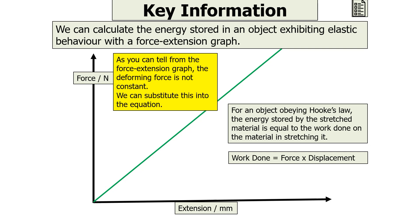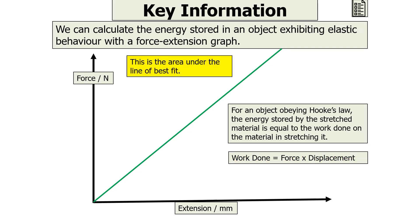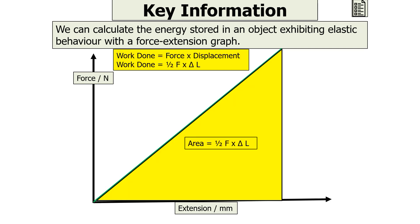We can substitute this into the equation, so work done is equal to half F — the average force — times by the displacement, which in this case is going to be the extension, or delta L. This is actually the area under the line of best fit, because the area underneath this graph is going to be a triangle, which is half base times height — so it's half F times extension.